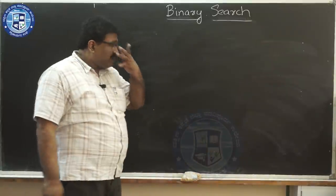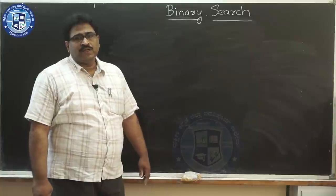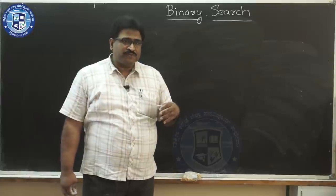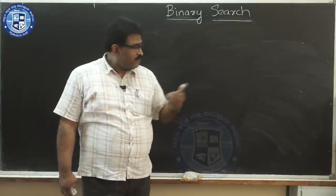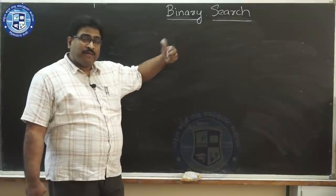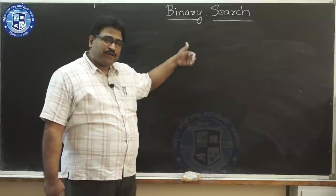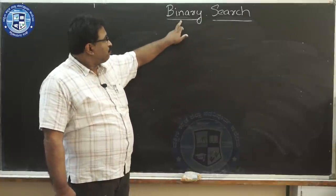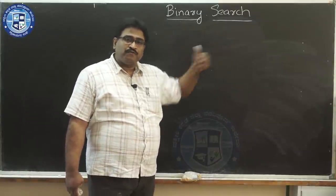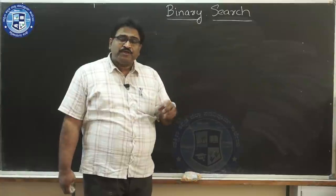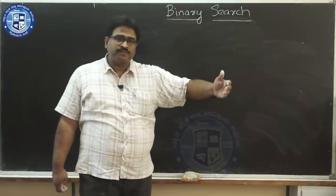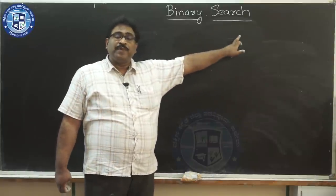The next method is binary search. There is an important difference from linear search. When I was putting values into the array for linear search, the values were not in any particular order. But for binary search, the elements must be sorted — they must be in a particular order. That is very important for binary search.